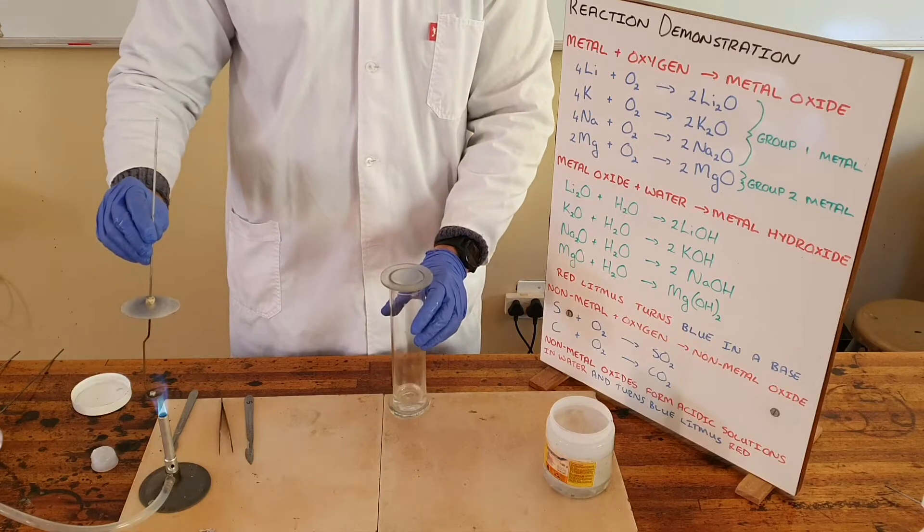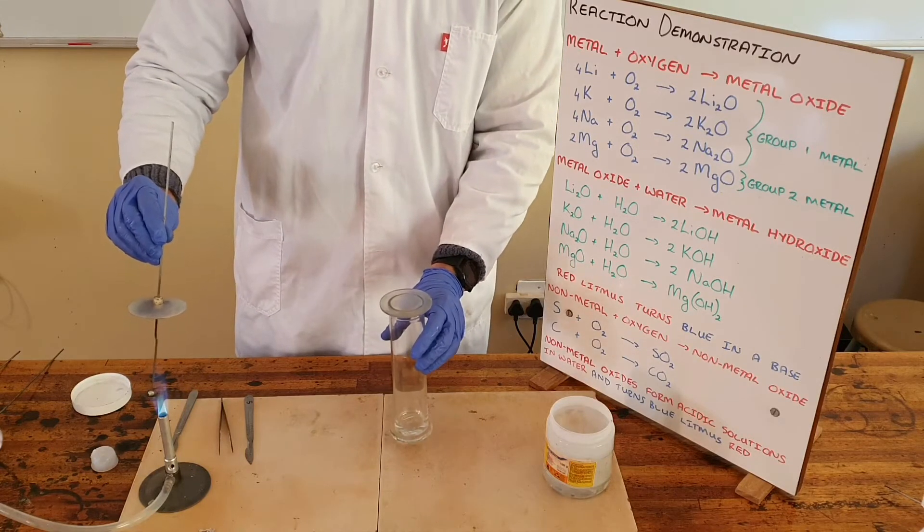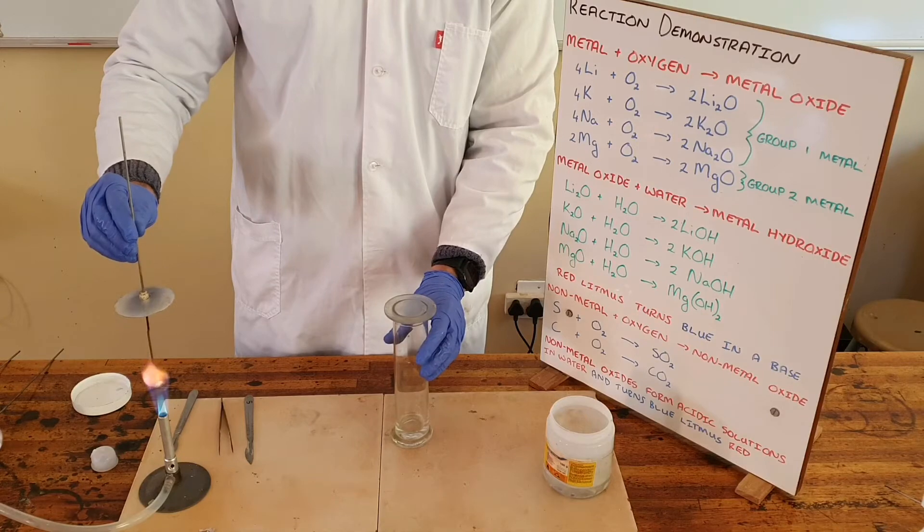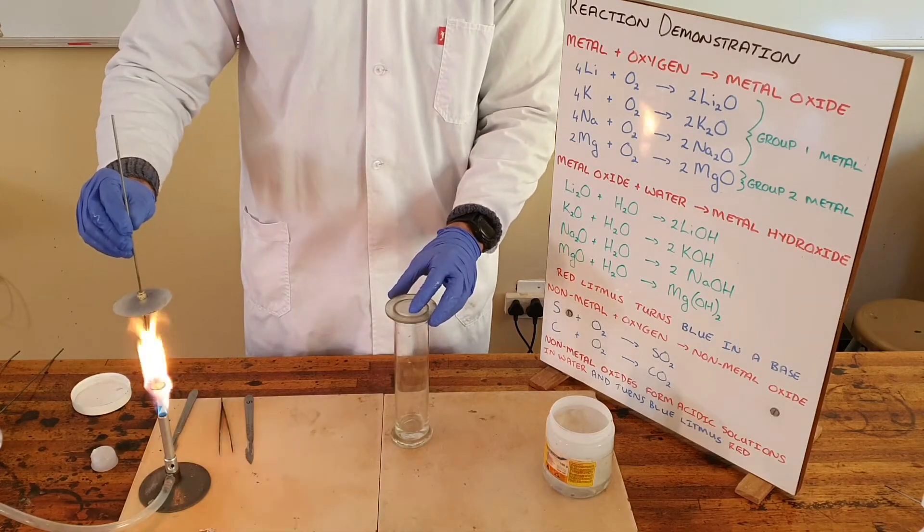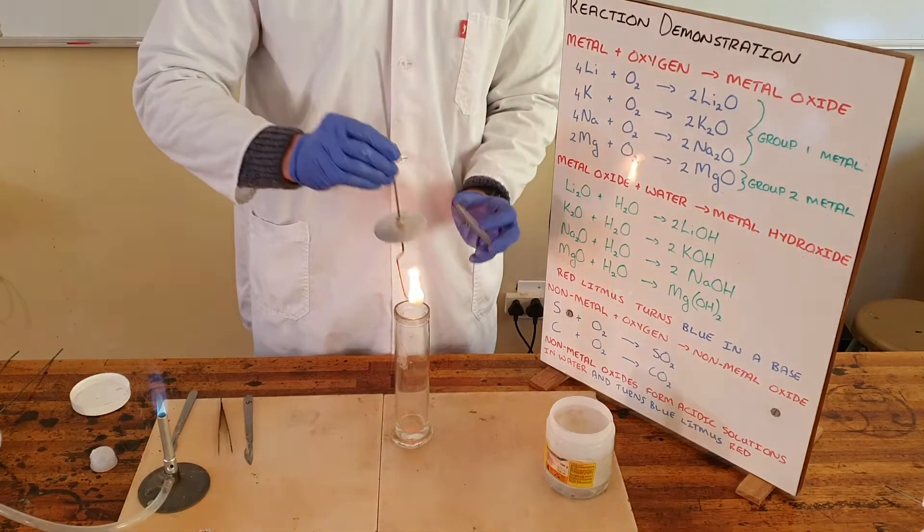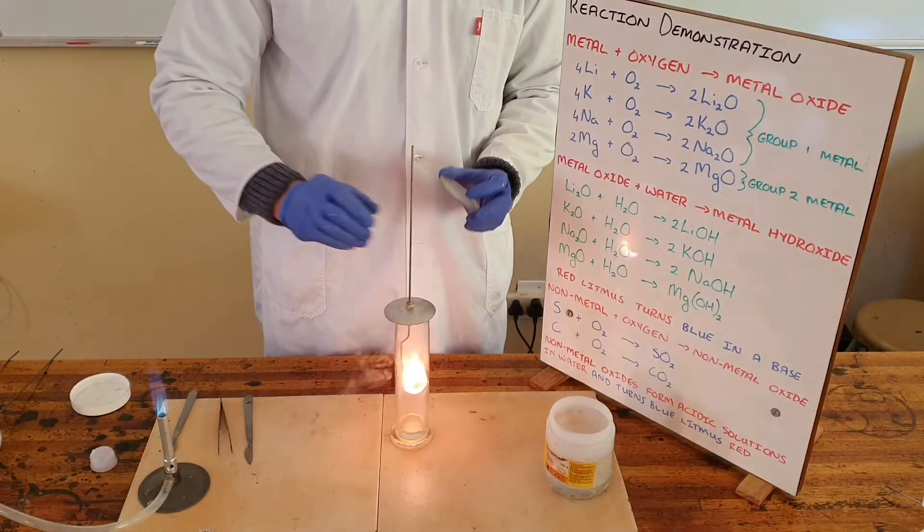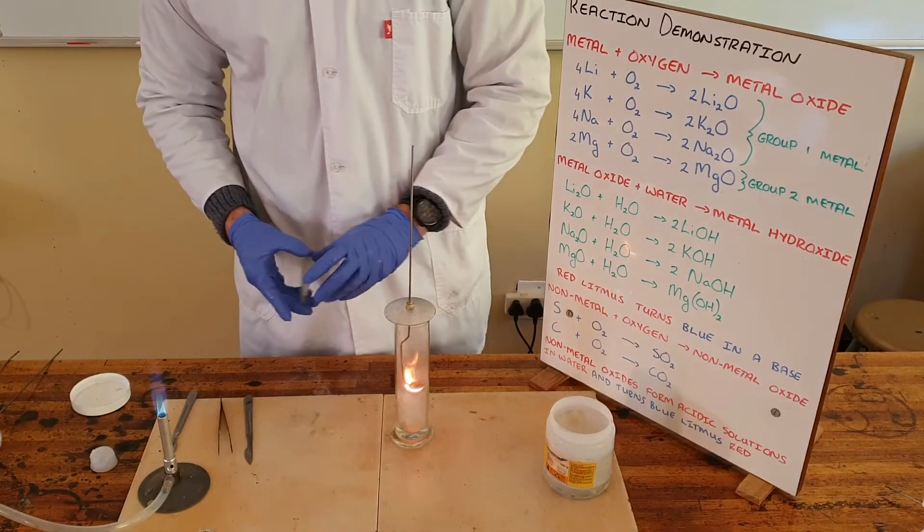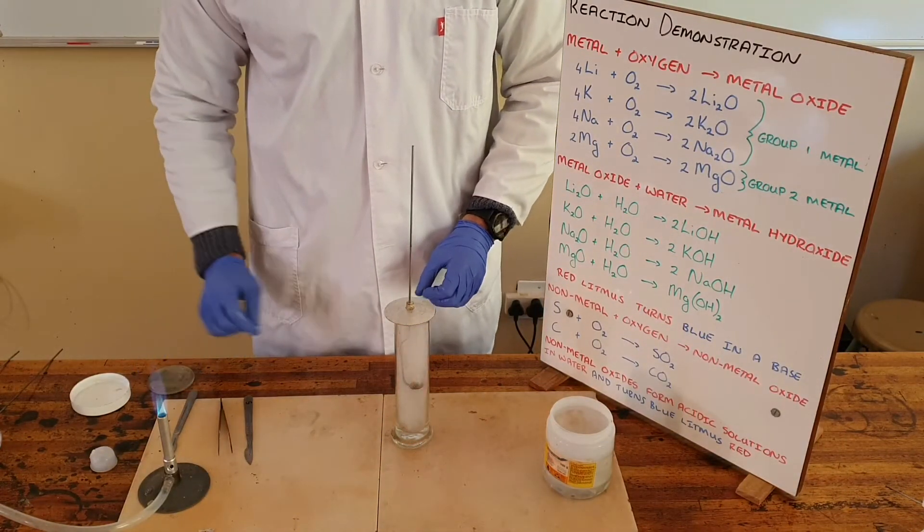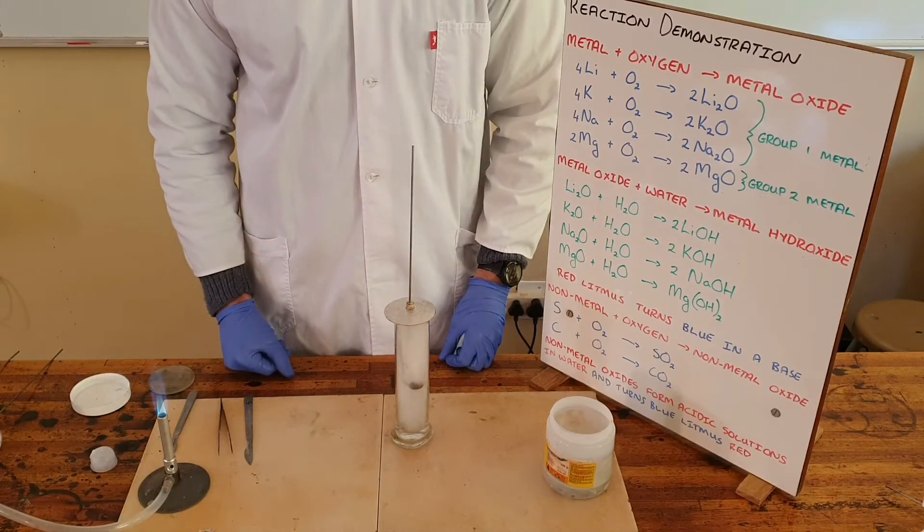The initial yellow-orange flame that we see will be the paraffin as it ignites, and then we can see that the potassium forms a very bright lilac flame when placed in the oxygen.